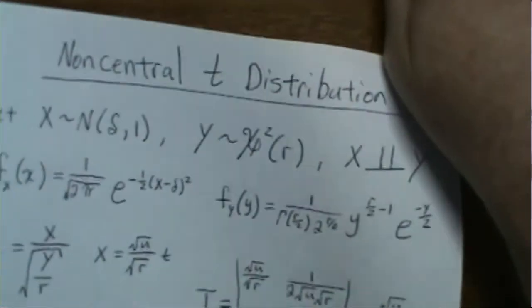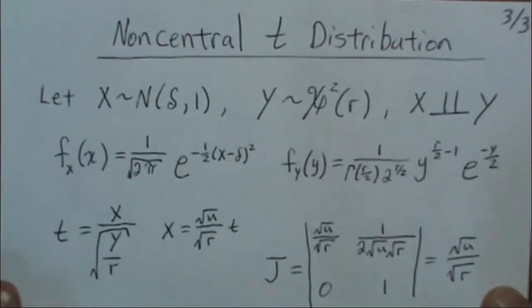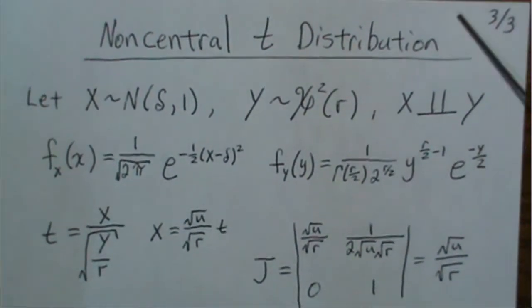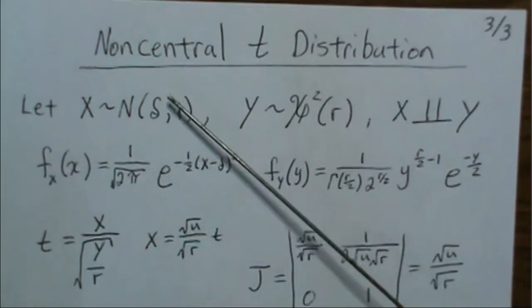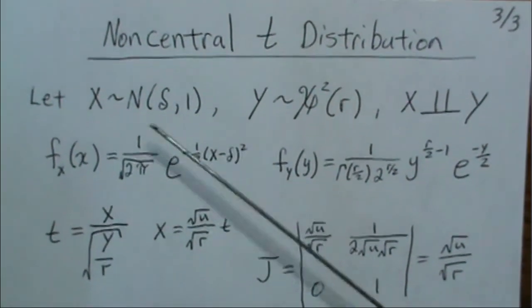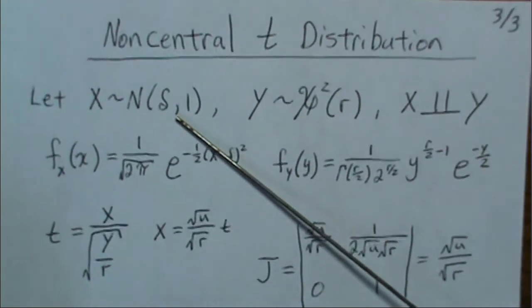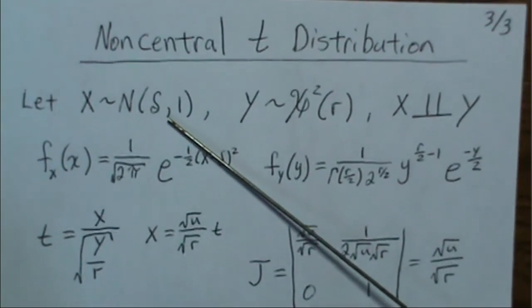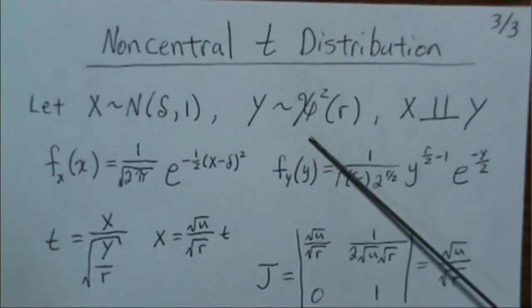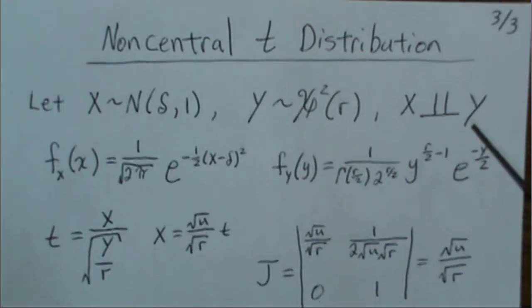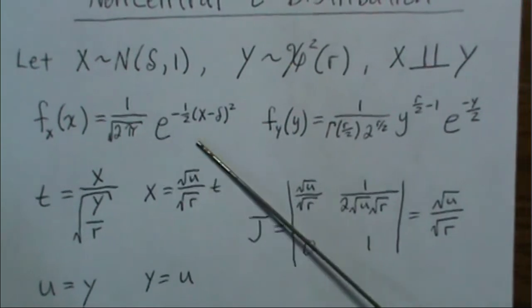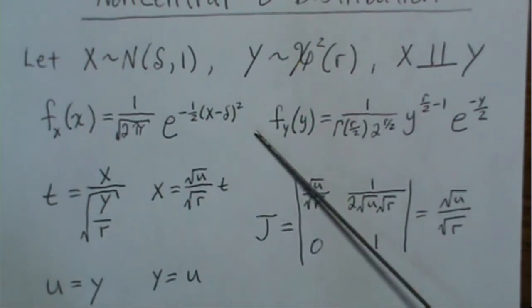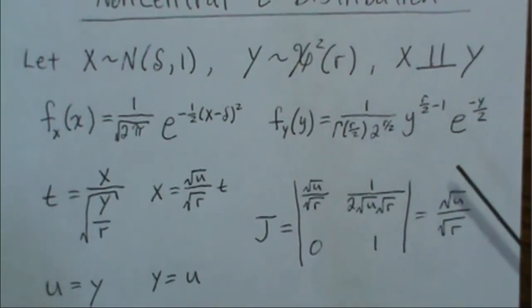But I first want to derive the non-central t distribution, which will go even quicker since the last page. So here instead of a standard normal, we have a normal delta 1. So our X is distributed normally. Our Y is, again, a chi-squared or independent. Here is the density of a normal with mean delta. Density of a chi-squared.